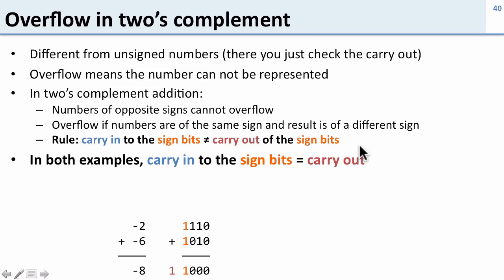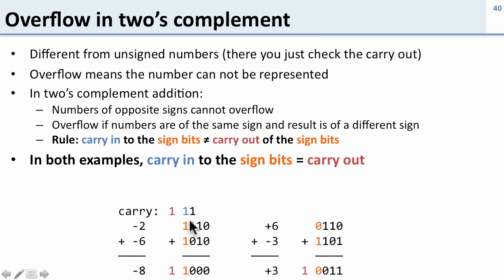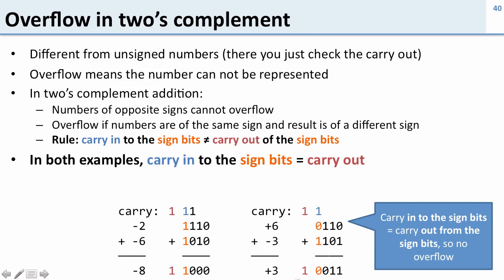Let's take a look at examples. Here's minus 2 minus 6, which gives minus 8. Here are the carries: the carry into the sign bit is 1, and the carry out from the sign bit is also 1 — they're the same, so this is not overflowing. Here's another example: 6 and minus 3. The carry into the sign bit is 1 and the carry out from the sign bit is 1 — they're the same, so there's no overflow here either.